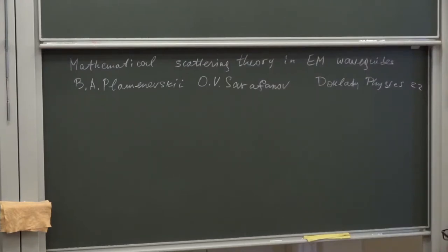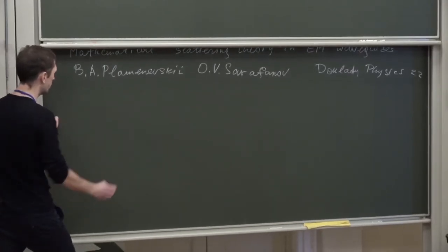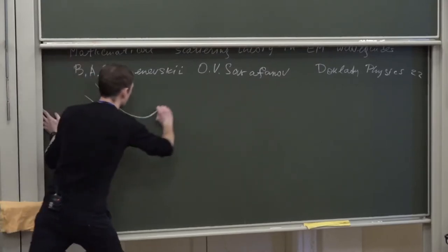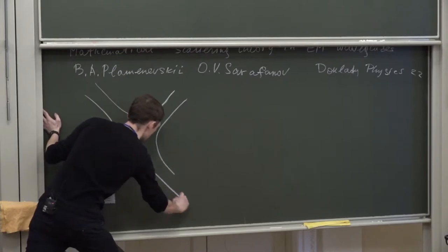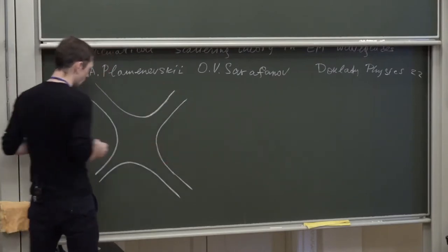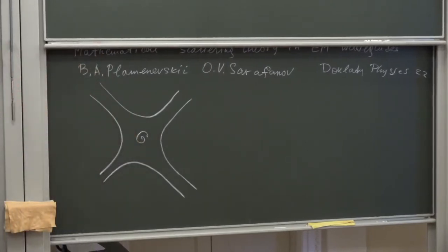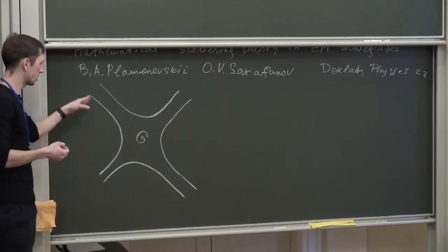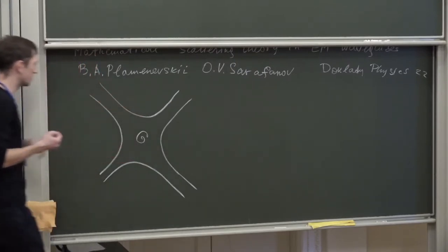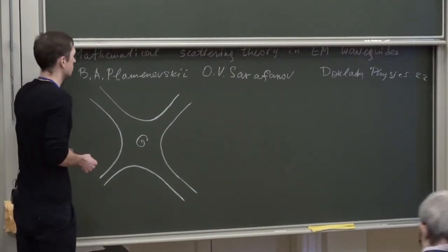Let me start with the explanation of the title. A waveguide, what we mean under waveguide, is a domain in three-dimensional space which coincides outside a large ball with the union of finitely many non-overlapping semi-cylinders. Let me denote it by G. We assume that the cross-sections are bounded domains and the boundary of the domain G is smooth. In such a domain, we consider the Maxwell system of equations.